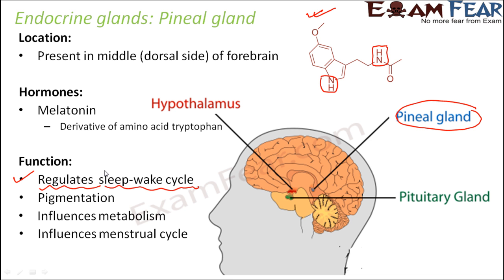In a way, we can say that it regulates the diurnal rhythm of the body. Diurnal rhythm means waking up during the daytime and sleeping during the night. There is another rhythm in some animals called the nocturnal rhythm, which means waking up during the night and sleeping during the daytime. In human beings, we have a diurnal sleep-wake cycle — we remain active during the daytime and sleep at night — and this occurs periodically on a 24-hour basis.